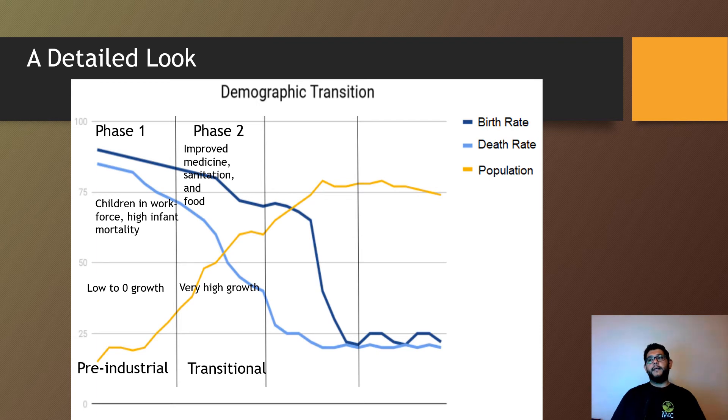Most countries are now in phase two or beyond, where medicine is improved, sanitation has gotten better, as has food. There's a very high growth rate, and we call this the transitional phase.